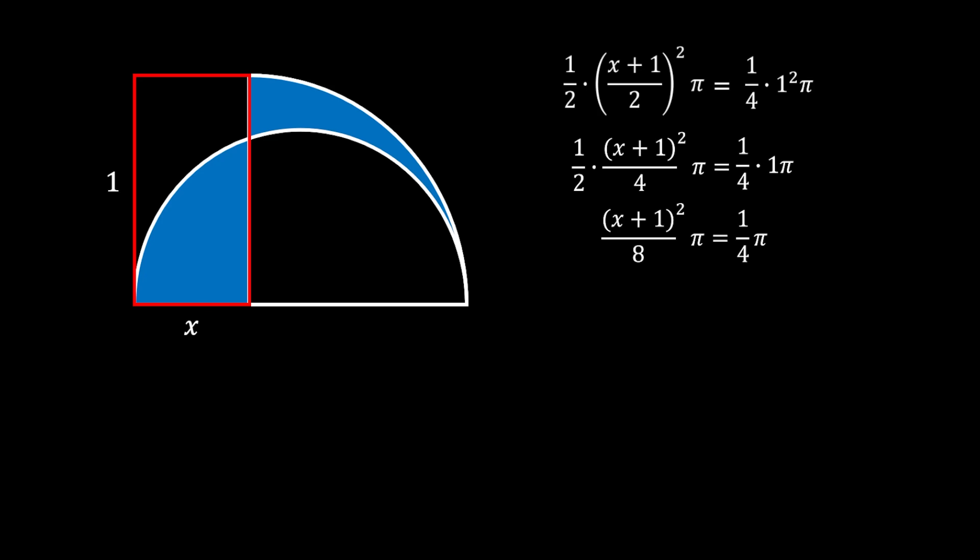We can simplify by multiplying everything by 8/π, which gives us (x + 1)² = 2.